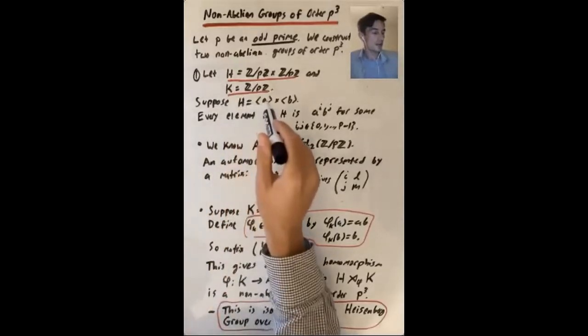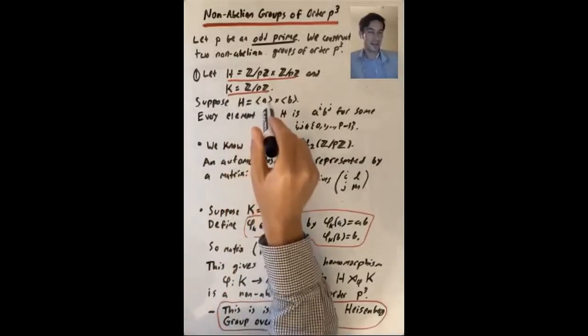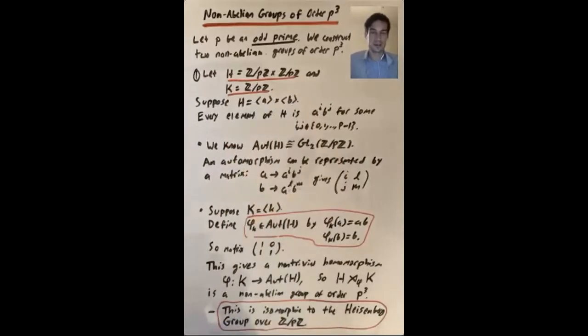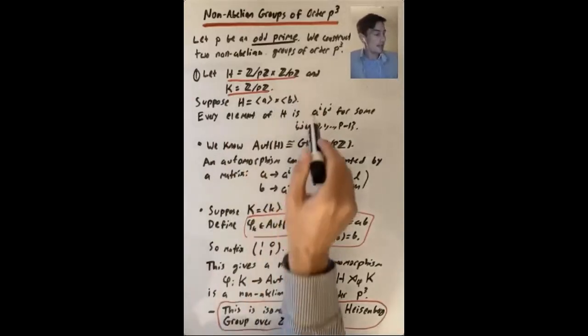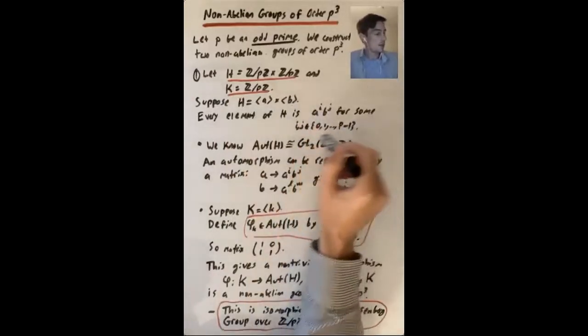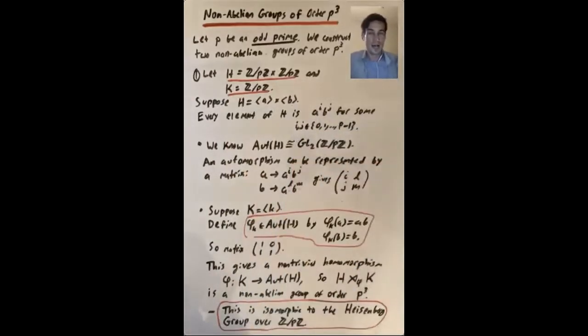Let's say that H is equal to the cyclic group generated by a cross the cyclic group generated by b. We know that every element of H can be written as a^i times b^j, where i and j go between zero and p minus one.